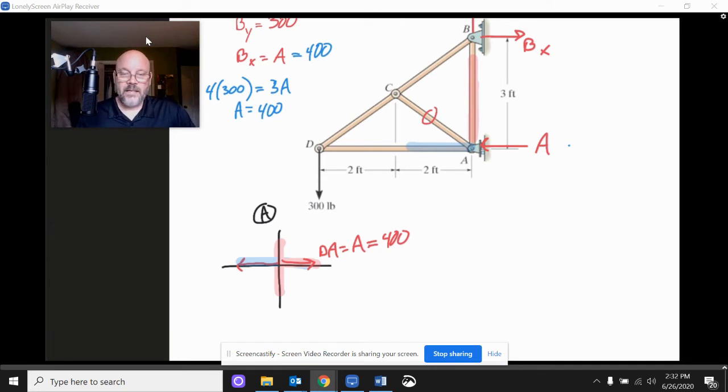But let's look at BA now. BA, the vertical one, we've got another one of these situations where if it pulls up, there's nothing to counteract. There's nothing pulling down. If it pushes down, there's nothing to counteract pushing up. And so that, what we learned from that is that BA is also equal to zero.